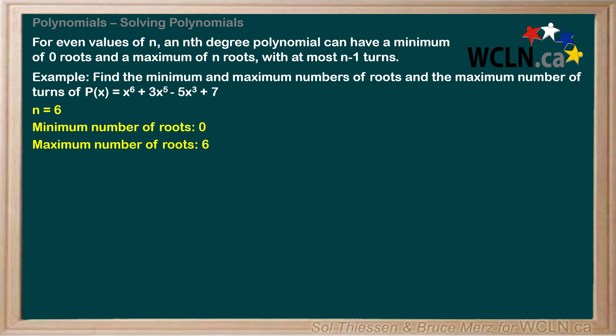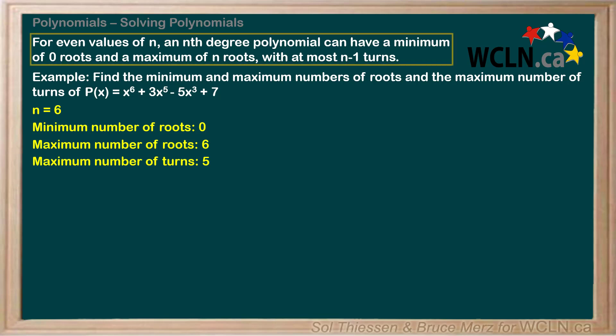We also know that our even degree polynomial can have at most n minus 1 turns, where n is 6. Since 6 minus 1 is 5, the maximum number of turns is 5. That's it for even degree polynomials. If you remember this statement, you'll be very well off.